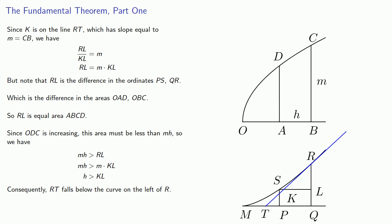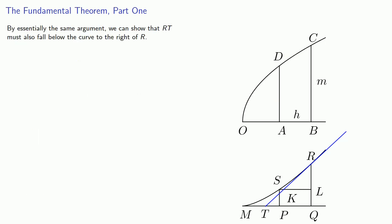This means that this line RT has to fall below the curve on the left of R. By essentially the same argument we can show that RT must also fall below the curve to the right of R. Which means that RT is entirely below the curve and so consequently RT is the tangent line to the curve.